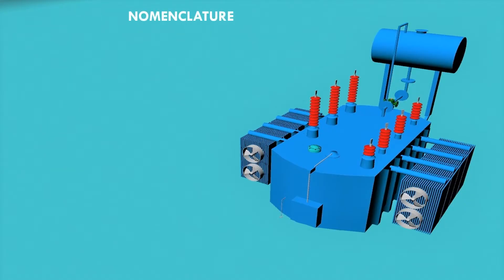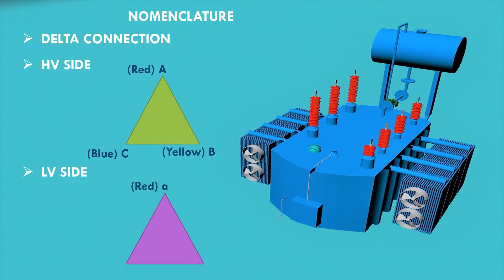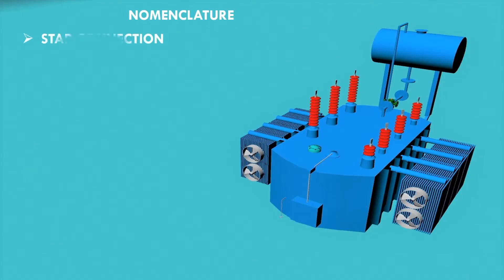For delta connection on the HV side, the red phase is denoted by capital A, the yellow phase by capital B, and the blue phase by capital C. Capital letters R, Y, and B can also be used for red, yellow, and blue phases respectively. On the LV side of the transformer, small letters a, b, and c are used for the three phases.